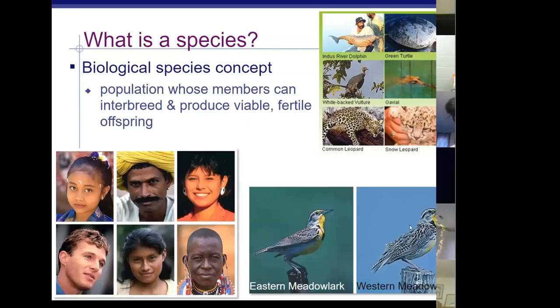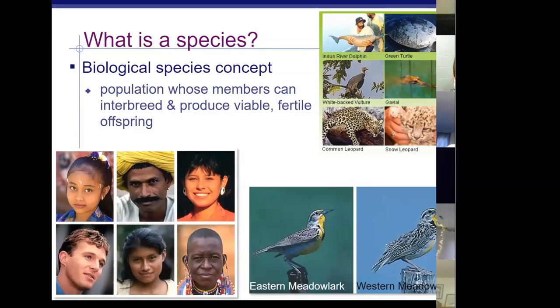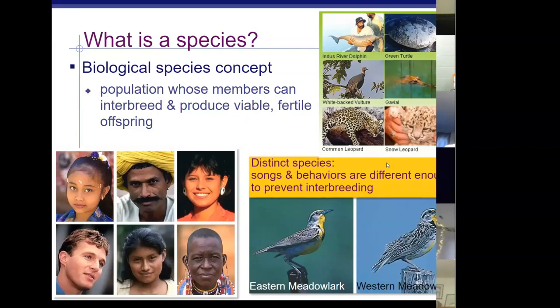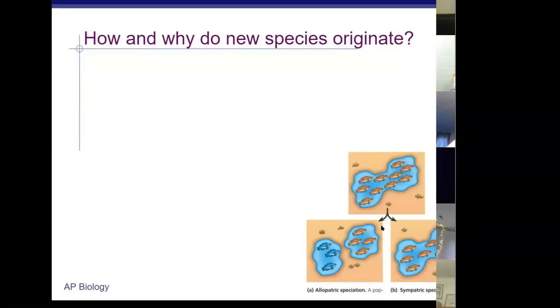Consider the eastern and western meadowlarks. They look alike and share a name — are they a variety within one species, or are they separate species? They are actually separate species. They have different songs and different behaviors, which prevent them from breeding with each other. They are also geographically isolated — eastern and western — so no interbreeding occurs between the two groups.